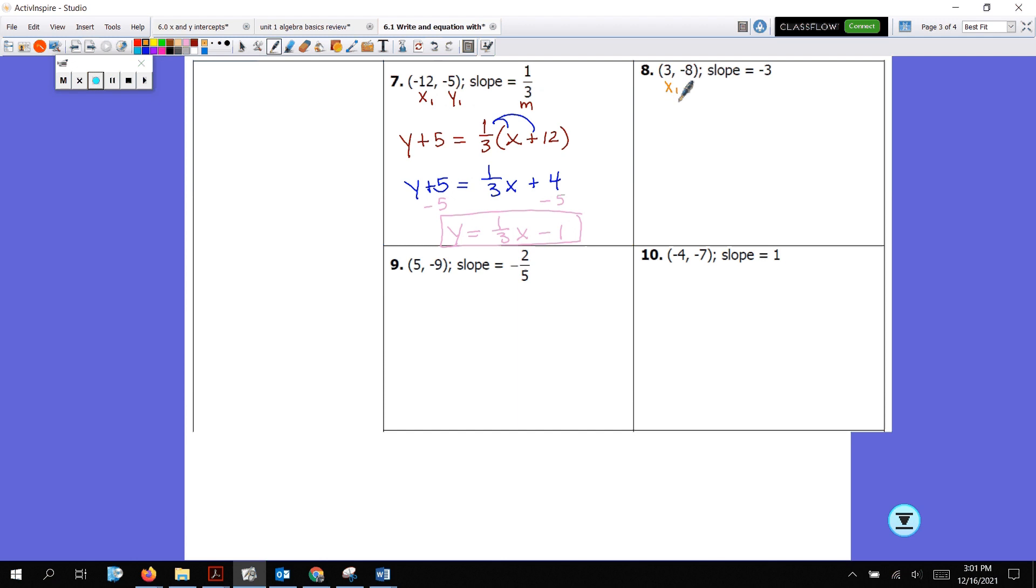All right. Now we have x1, y1, and here from number 8, y plus 8. Equals negative 3 times x minus 3. Remember, if it's a positive number, you're going to have subtraction in front of it. If it's a negative number, you're going to have addition in front of it. Let's distribute. Negative 3x. Negative 3 times negative 3 is positive 9. Y plus 8. Subtract 8 to get y by itself. And y equals negative 3x plus 1.